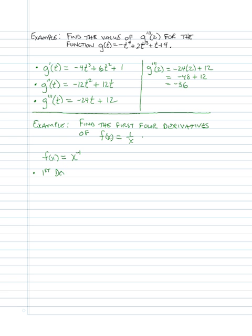The first derivative: we bring the negative one down and multiply it by the coefficient, then reduce the power by one, giving us negative one times x to the negative two. We don't normally leave things in that form, so we rewrite it as negative one over x squared. The first derivative is -1/x².